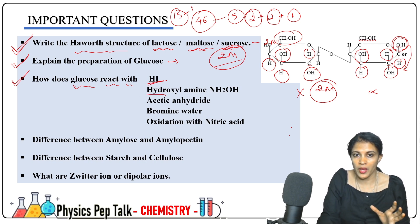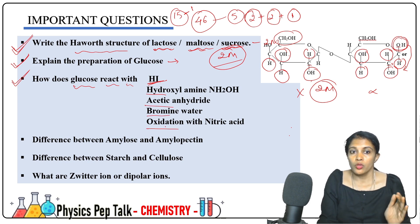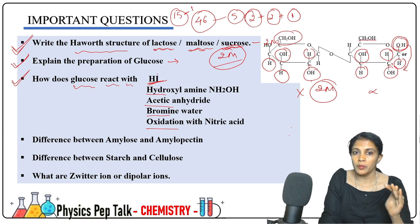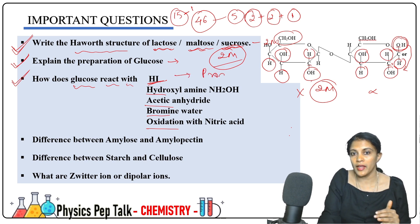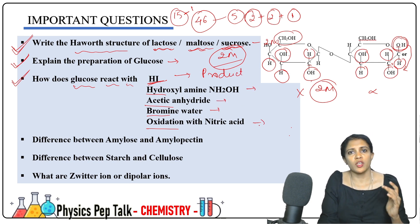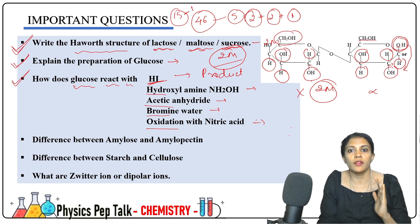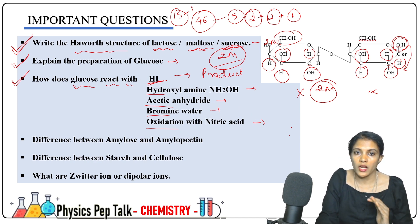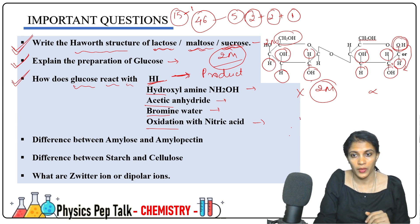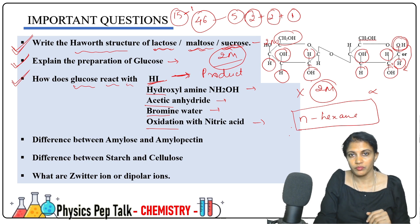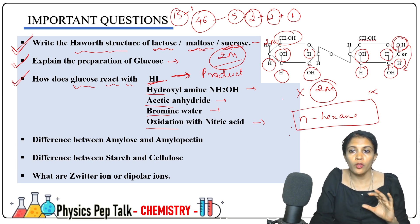The reagents include: hydrogen iodide, hydroxylamine, acetic anhydride, bromine water, and oxidation with nitric acid. Glucose reacts with each of these reagents and gives a product. For example, when glucose reacts with hydrogen iodide, you get n-hexane formation. N-hexane is your product — you have to mark this. This is 1 mark.